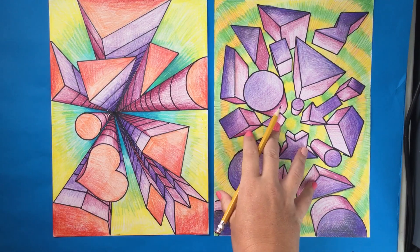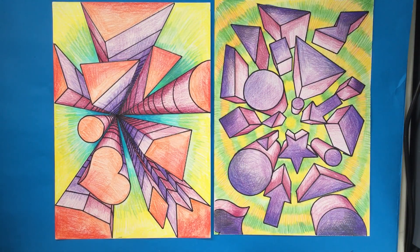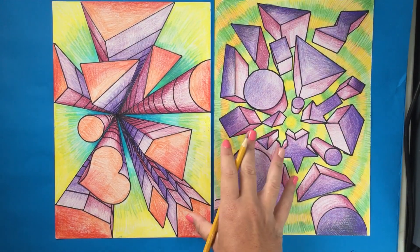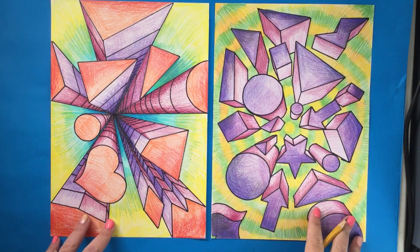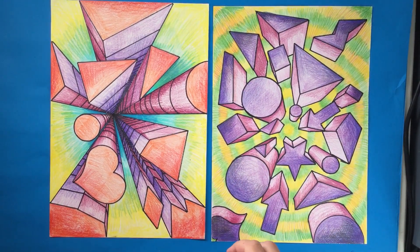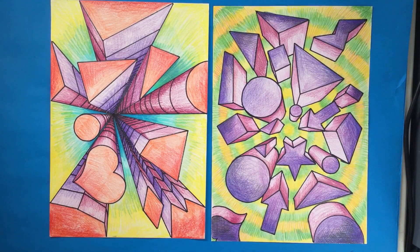And space is one of the seven elements of art that help us to make our artwork look more interesting and like real life. And our focus for our optical illusions is using the elusive technique of perspective, mainly one-point perspective.